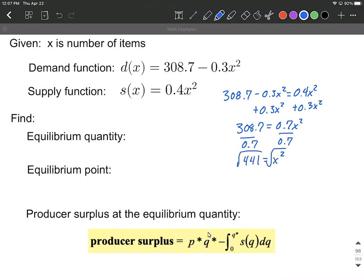Next, we'll apply a square root to both sides, giving us x equals 21. We didn't need to worry about the positive and negative case in this situation because x is our number of items. We would only either demand a positive number or supply a positive number. So that's gonna be our equilibrium quantity.